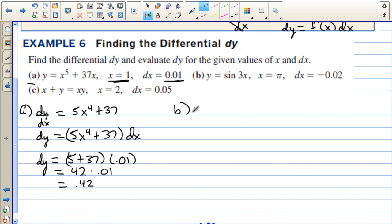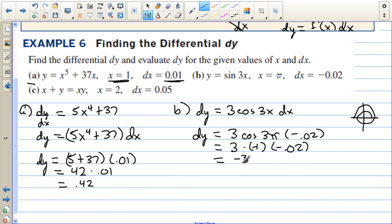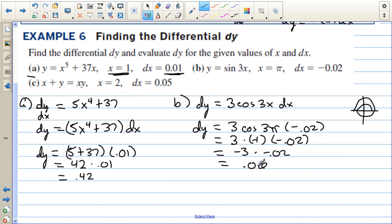For letter B, we have dy equals 3 cosine(3x) dx. And we're going to evaluate this. So dy equals 3 times the cosine of 3π. And then we're going to multiply that by -0.02. So that's equal to 3 times, let's see, the cosine of 3π. There's 1π, 2π, 3π. The cosine is negative 1 times -0.02. And that's -3 times -0.02. So that's positive 0.06. So the change in y is 0.06 when the change in x is -0.02.